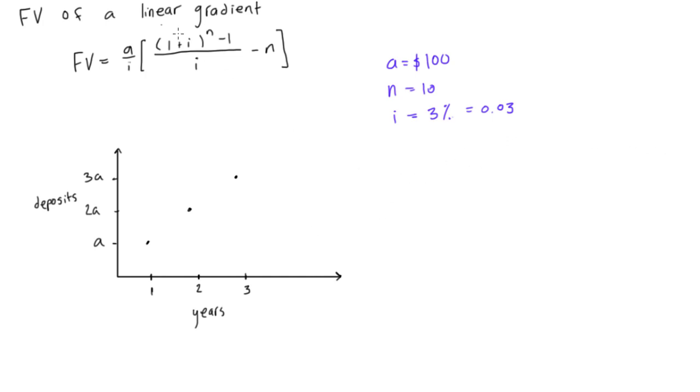All right, so if we just go and plug all of this into our formula here, we get FV is equal to 100 over 0.03 times all this stuff. We get 1.03 to the power of 10 minus 1, right, I just added these together, 1 plus 0.03, divided by 0.03 over 0.03, and then we have to minus our n, so we minus 10.